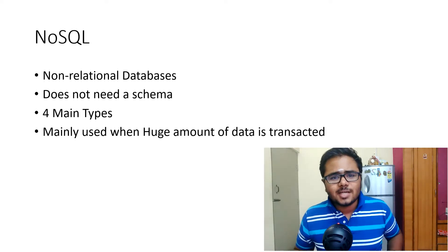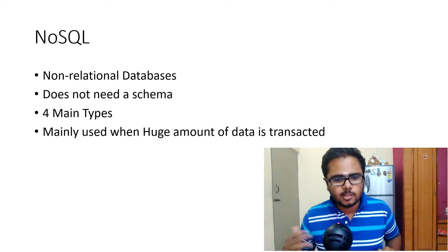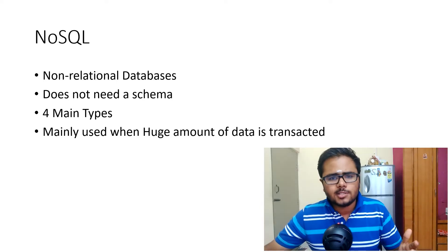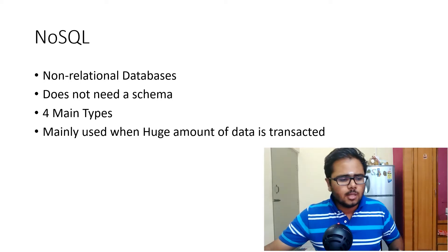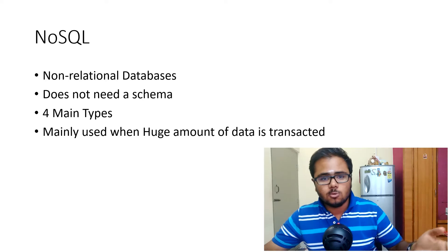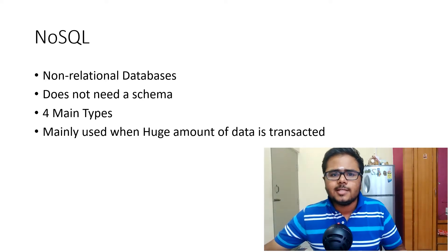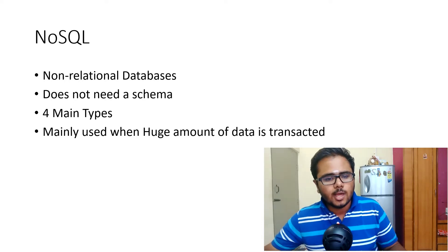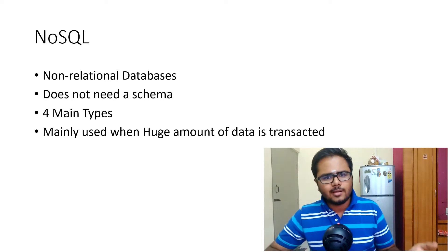There are four main types in NoSQL, which we'll be talking about very soon in this video. And when you have a huge amount of data which is to be processed and transacted very frequently — for example, take a company like Facebook or Google — petabytes of data are being transacted. So in that kind of situation, you would actually want to opt for NoSQL.